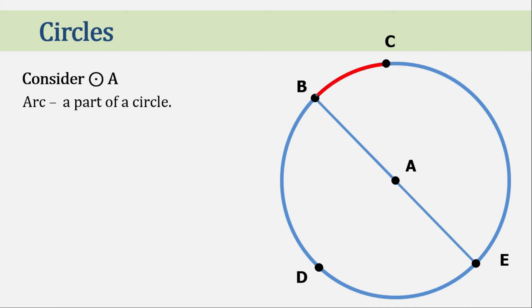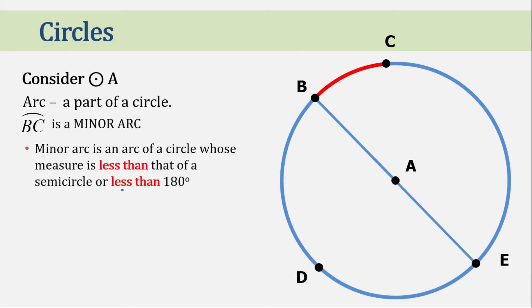We name this arc BC and this is how we illustrate it. Now, arc BC is a minor arc. The definition of minor arc is an arc of a circle whose measure is less than that of a semicircle. Later, I will tell you what is a semicircle. But by the name itself, you can know that it is half of the circle because of the prefix semi.